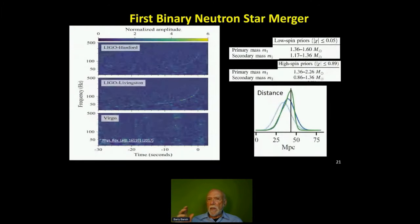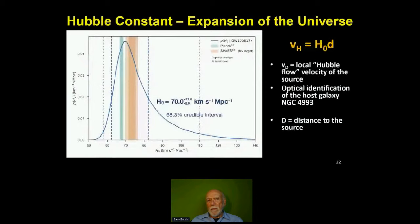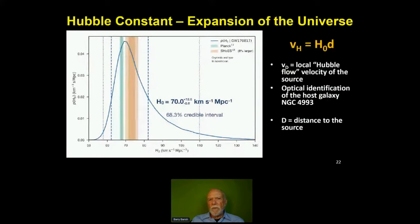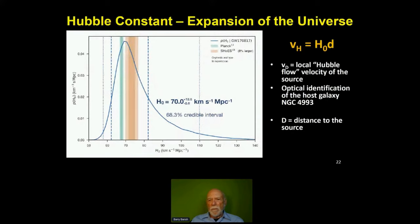The same event was also useful because we could identify which galaxy it came from, and knowing the distance allowed us to determine the Hubble constant. Even on one event we determined the Hubble constant, consistent with the two values that are in tension with each other but with larger errors. We can look forward to either resolving this tension or accumulating enough data — it'll take more like 100 events, not one, to get very high precision on the Hubble constant from gravitational waves.